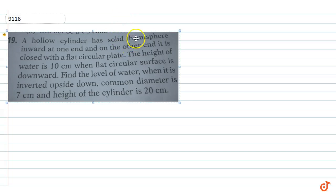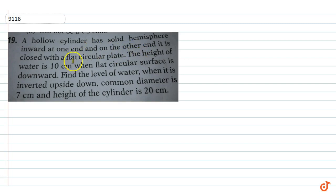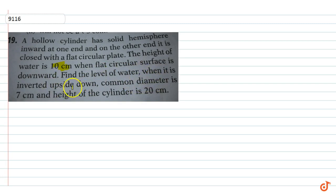A hollow cylinder has a solid hemisphere inward at one end, and on the other end it is closed with a flat circular plate. The height of the water is 10 cm when the flat circular surface is downward. Find the level of water when it is inverted upside down. The common diameter is 7 cm and the height of the cylinder is 20 cm.